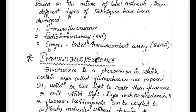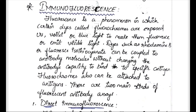We will discuss ELISA in another part. In this part we are going to majorly discuss about immunofluorescence and radioimmunoassay. Fluorescence is a phenomenon in which certain dyes called fluorochromes are exposed to UV, violet, or blue light to make them emit visible light. This type of phenomenon is called fluorescence.